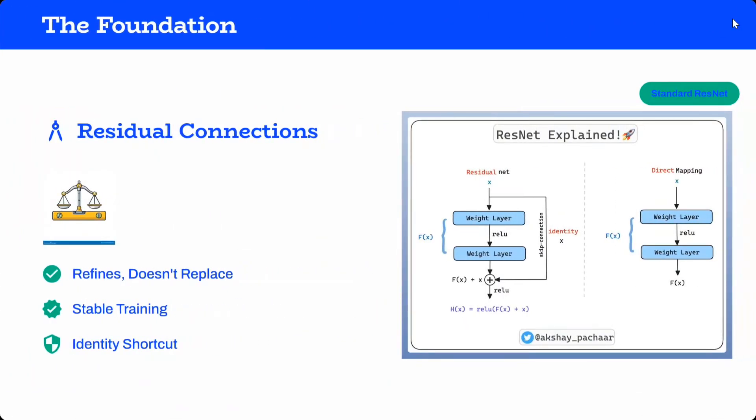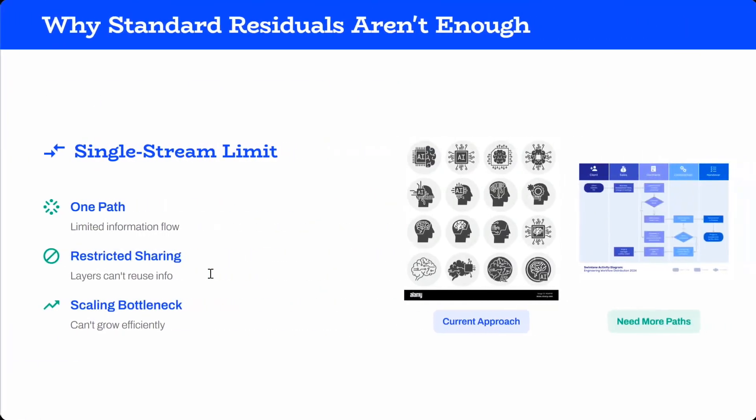The foundation is residual connections - most transformers use them. You can see on the screen that the previous output from the layer is getting added to the next layer, so you're not allowing the network to forget previous information. It refines, doesn't replace, stabilizes training with an identity shortcut.